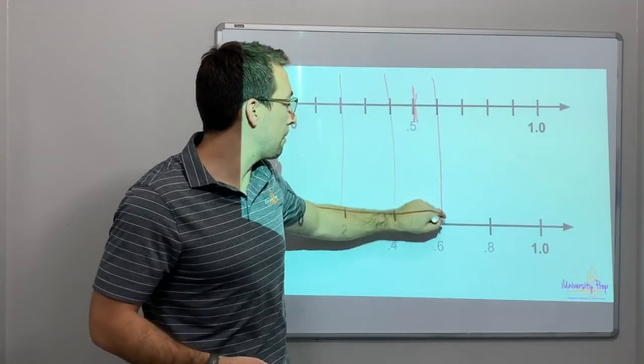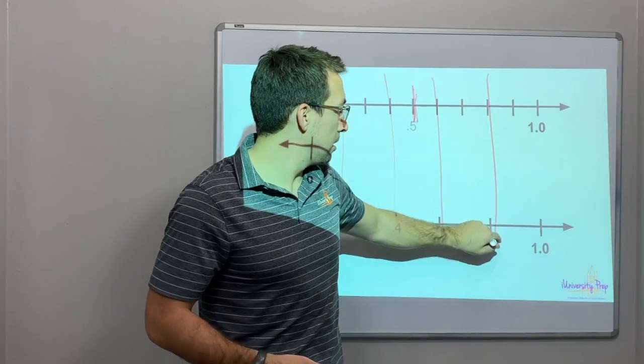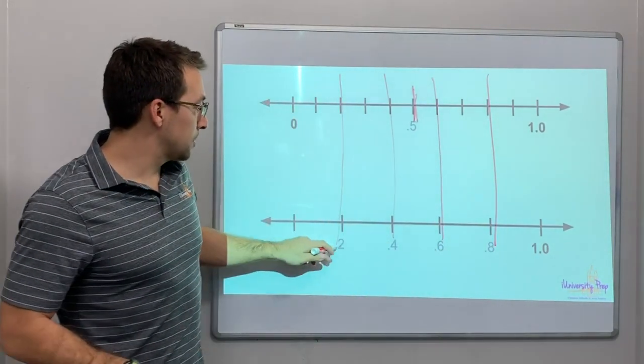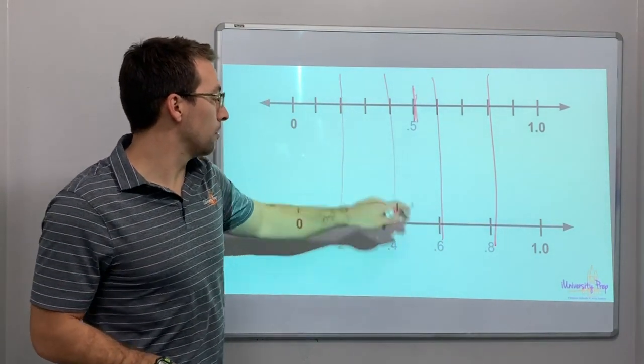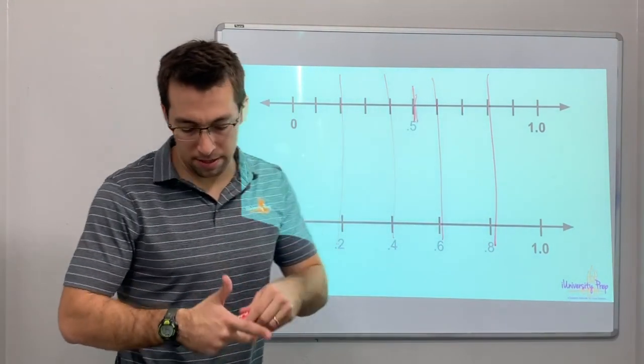That's cool. And notice that these lines match up. 0.2, 0.4, 0.6, 0.8. It's the same thing.